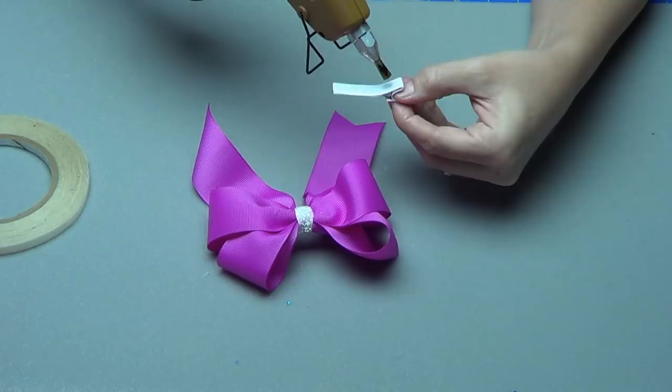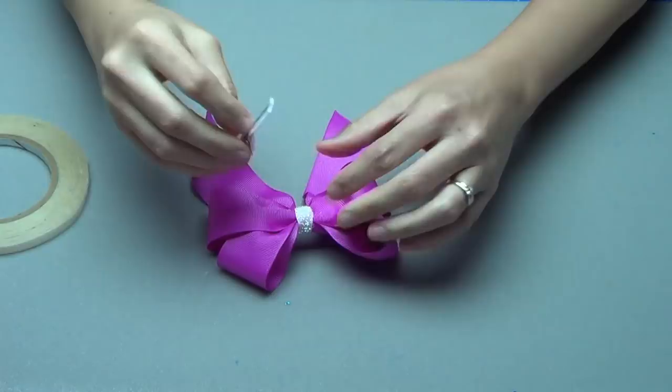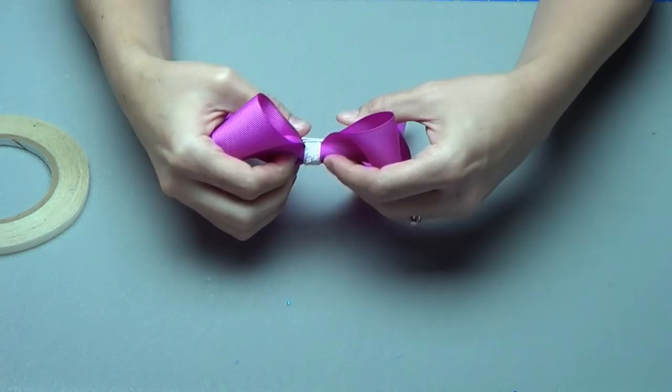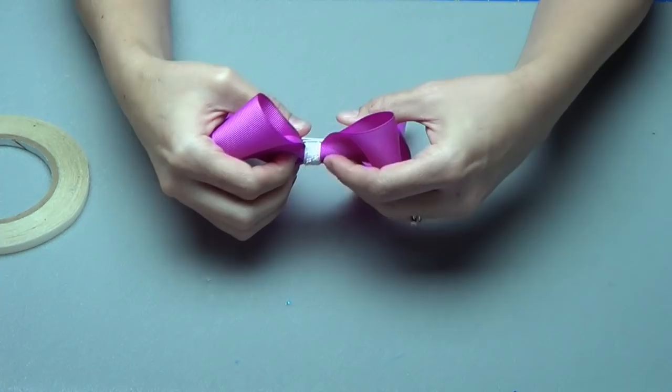Now to add it to the back of the bow, add a strip of hot glue. Flip the clip over and just glue it straight on the back. Press it on there and make sure it's secure. And you're all done. You've made a really cute four-loop tails-down bow.